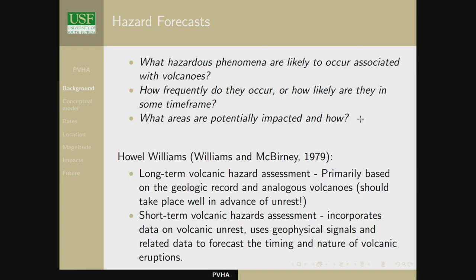There are a whole series of questions embedded in a forecast: What hazardous phenomena are likely to occur? How frequently do they occur? What are the rates of activity? How likely are they in some time frame? What areas are potentially impacted and how? Traditionally in volcanology, we've made a distinction between long-term forecasts and short-term forecasts. The earliest reference I've found is from a textbook by Howell Williams, a very famous volcanologist from UC Berkeley.